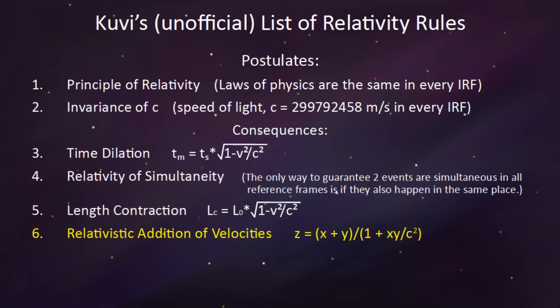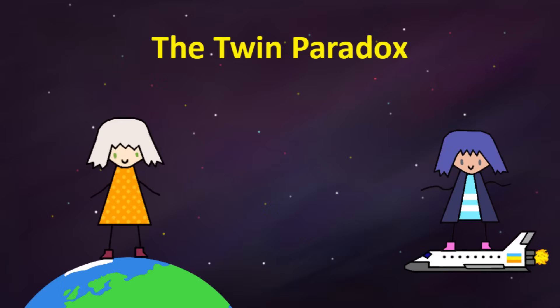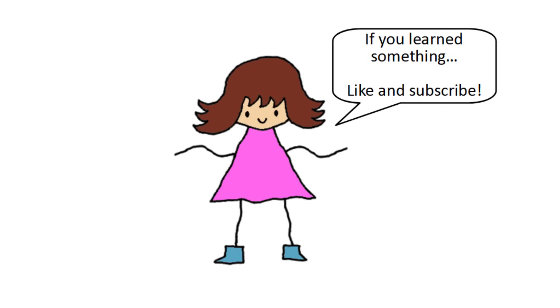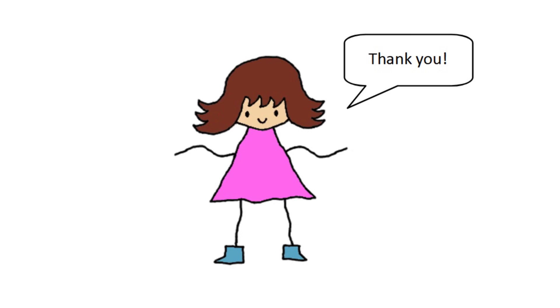Anyway, relativistic addition of velocities is the final piece of the puzzle we need to fully examine the twin paradox, so I hope you join me in the next episode. For now though, if you learned something interesting, make sure to like the video and subscribe to the channel. Thank you for watching, and I'll see you next time. Byeee!